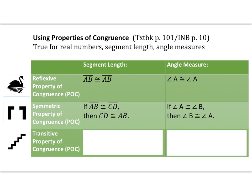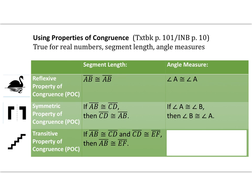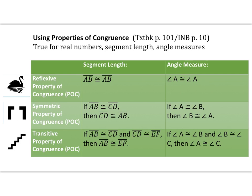Our transitive property, similar to equality, uses congruence instead. So if segment AB is congruent to CD, and CD is congruent to EF, then AB is congruent to EF — in other words, AB and EF are both congruent to the same segment, so they must be congruent to each other. The same is true for angles: if angle A is congruent to angle B, and angle B is congruent to angle C, then angle A must be congruent to angle C.